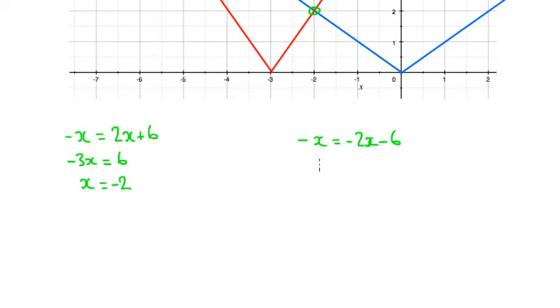And if I do this one, I'm going to add 2x to this side, so I'll get positive x equals negative 6. So those are my two solutions, minus 2 and minus 6.